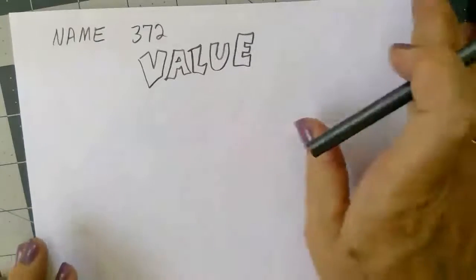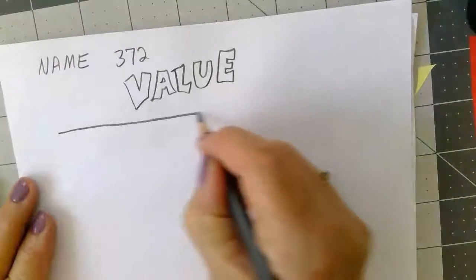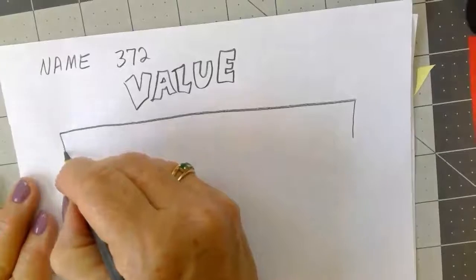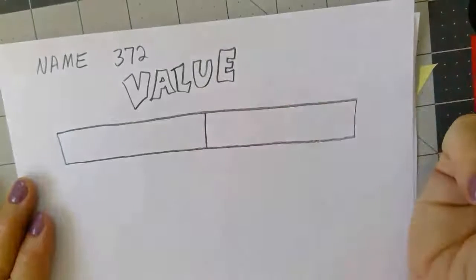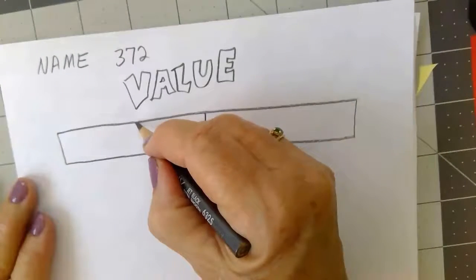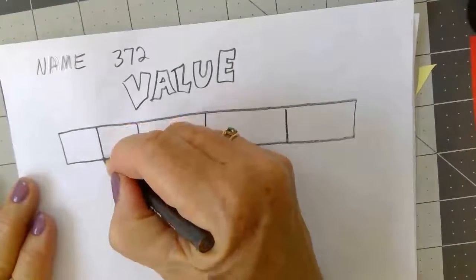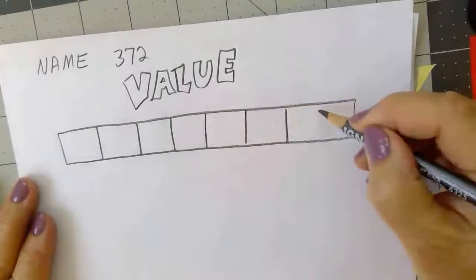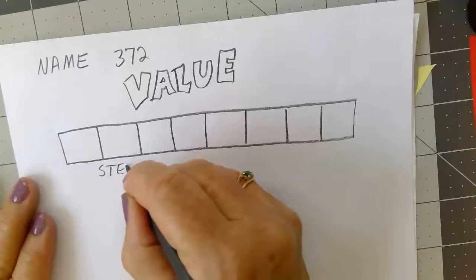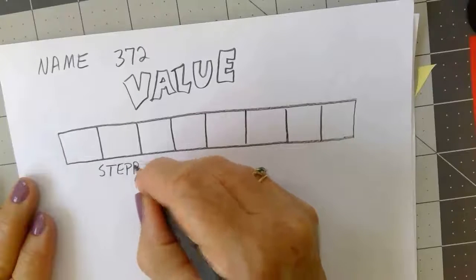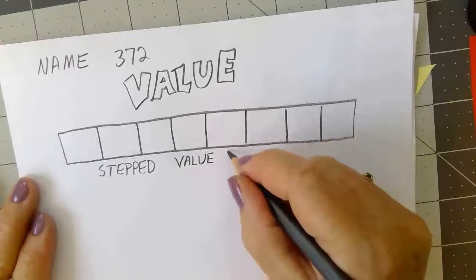I want to start with a couple basic value exercises to help you with this. Start by giving yourself a long narrow box nearly as wide as the paper, and then divide it in half, doesn't have to be perfect. Just kind of eyeball it and divide those two halves in half, and divide each of those in half again. What we'll be making here is called a stepped value scale.